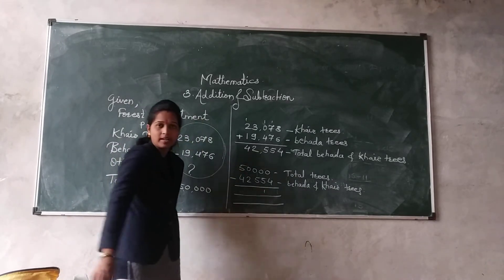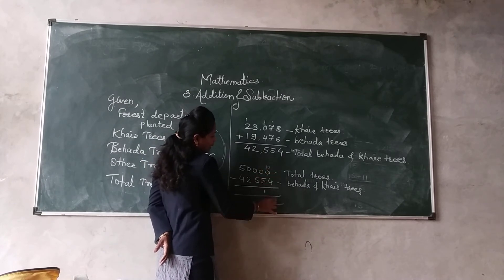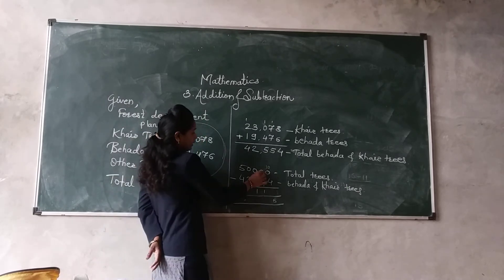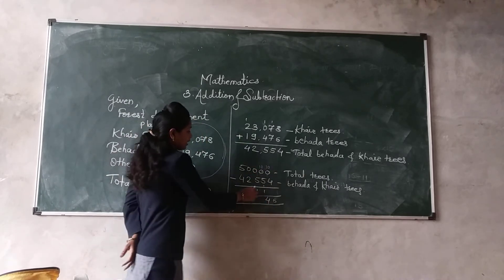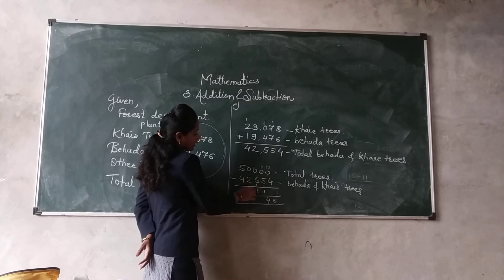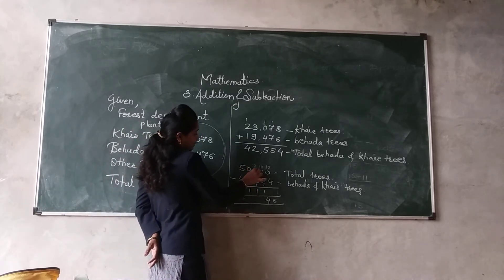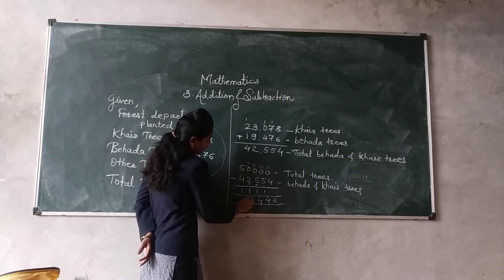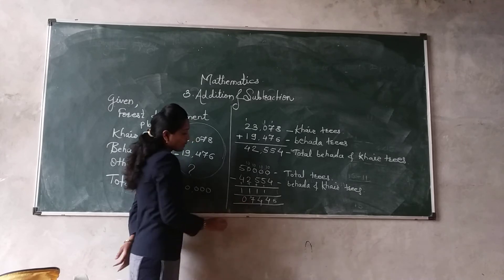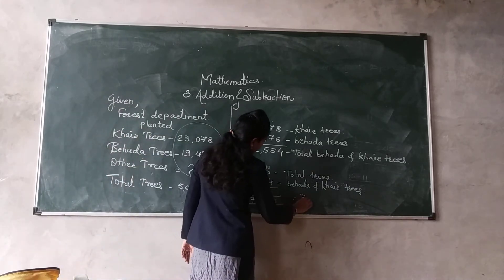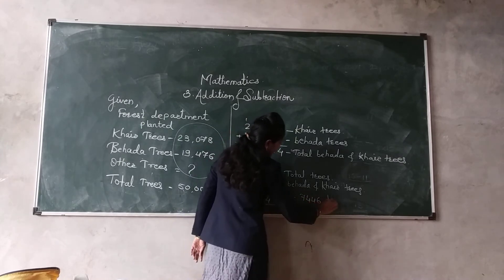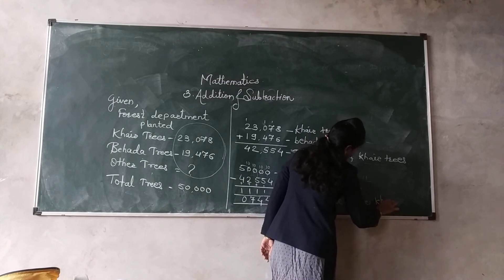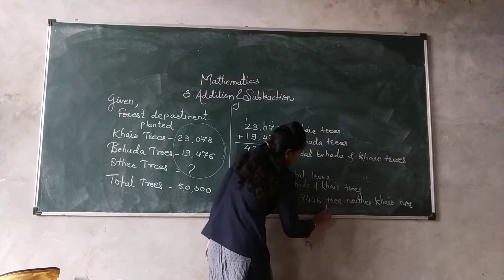0 minus 4 is not possible, so take one carry — here is your 10. 10 minus 4, answer comes 6. Do the addition: 5 plus 1 is 6. 0 minus 6 not possible, take one carry — 10 minus 6, answer comes 4. Again 5 plus 1 is 6. 0 minus 6 not possible, take one carry — 10 minus 6, answer comes 4. 2 plus 1 is 3. 0 minus 3 not possible, taking one carry — 10 minus 3, answer is 7. So 4 plus 1 is 5. 5 minus 5, answer is 0. Therefore the answer is 7,446.